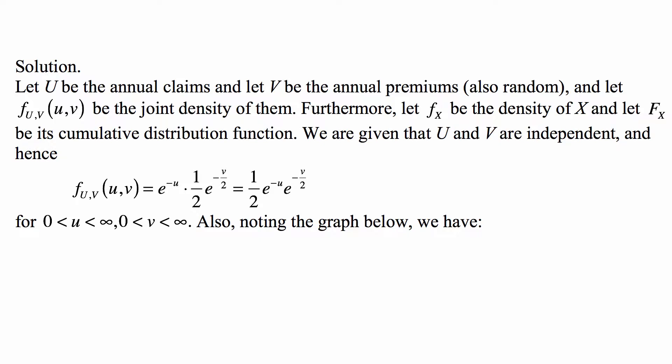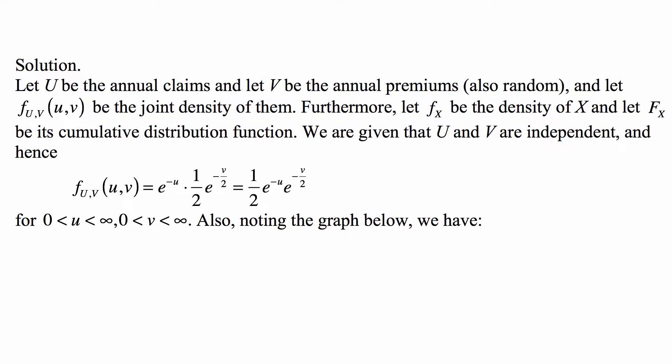The second one is exponential with mean 2, and therefore the density is the reciprocal of the mean. So, (1/2)e^{-v/2}, because the hazard rate is 1/2 if the mean is 2. We multiply it out and the joint density is (1/2)e^{-u}e^{-v/2}, for both u and v between 0 and infinity.